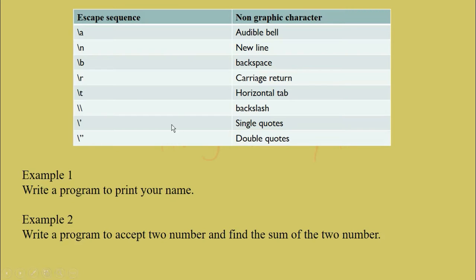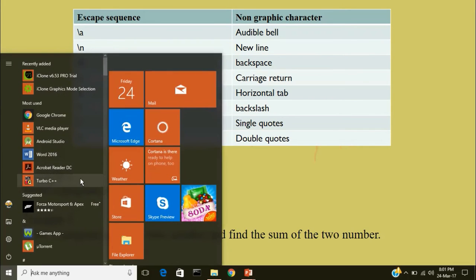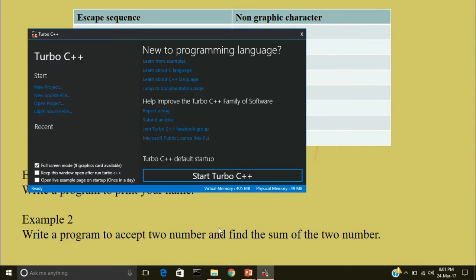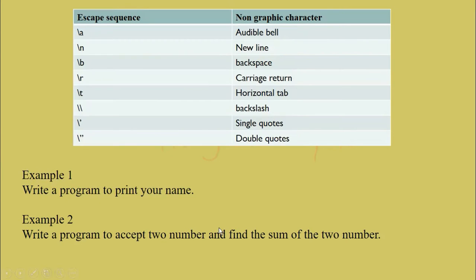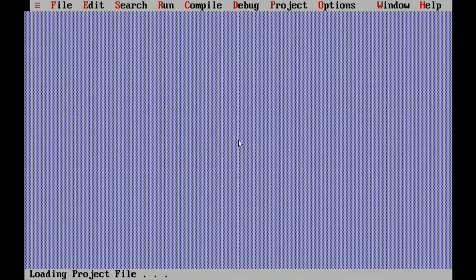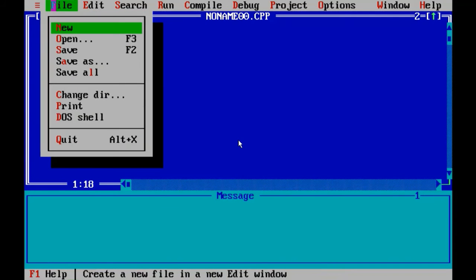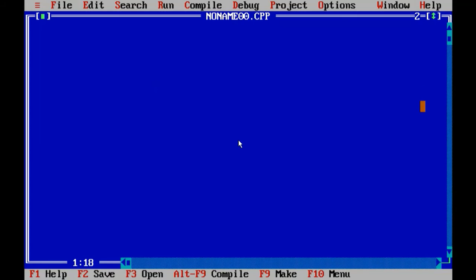So we discussed what are non-graphic characters. So here are some few examples of it. So we will do this example. Problem 1: Write a program to print your name. So this program is similar to Hello World. Start Turbo C++. Okay. I would like to keep the size of the screen small so I will press Alt Enter.